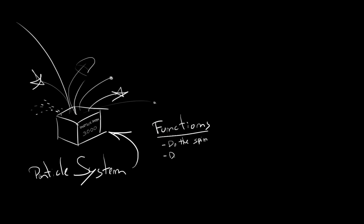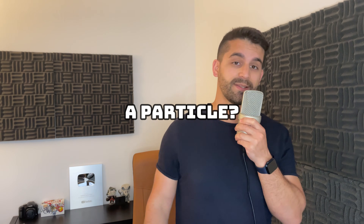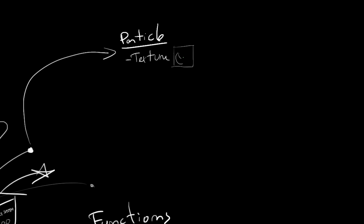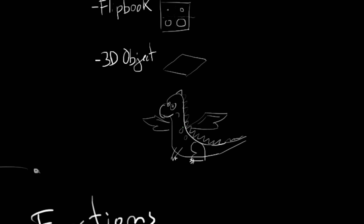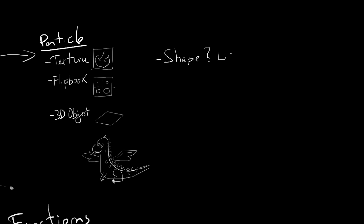It's essentially a bunch of functions and features that allow you to control a particle. And what is a particle, you may also ask? Anything. A particle can be anything. It can be a texture, like an image, like a flipbook, or it can be a 3D object, like a plane or even a dragon. A particle can take any shape or color you want as well.